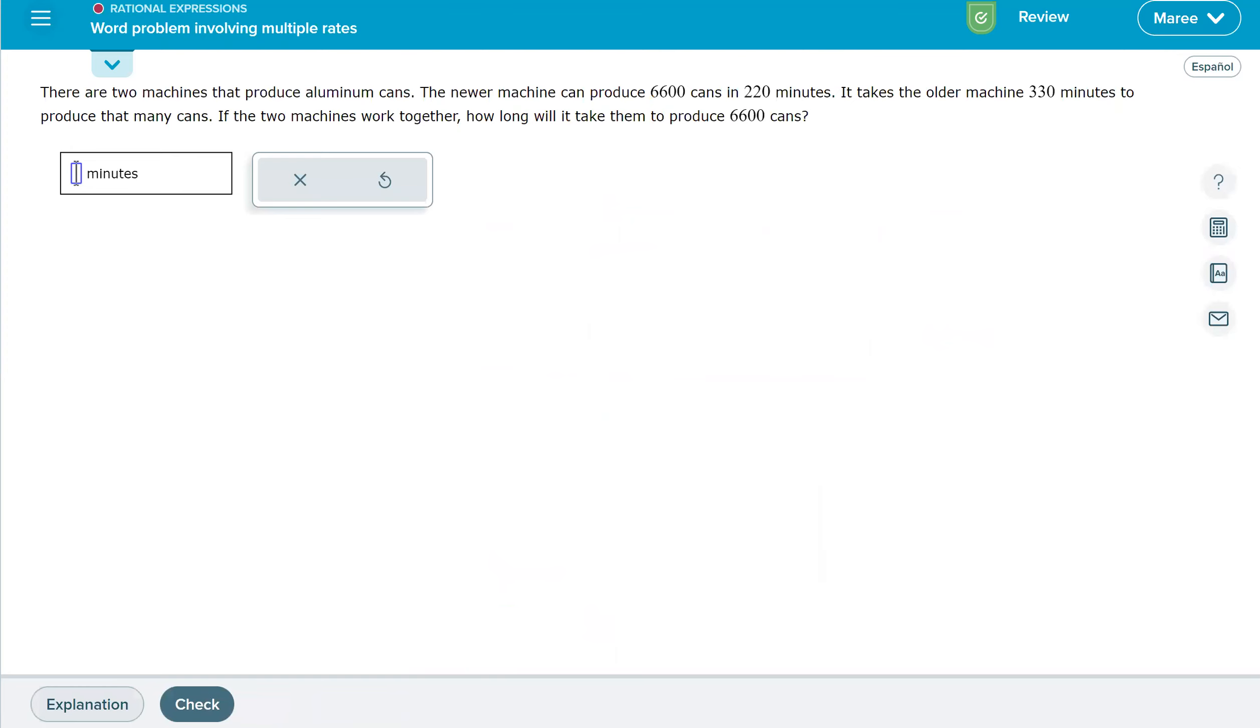There are two machines that produce aluminum cans. The newer machine can do 6,600 cans in 220 minutes. So when we divide 6,600 divided by 220 minutes, we get 30 cans per minute.